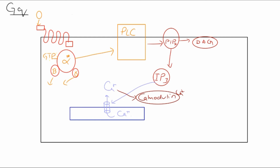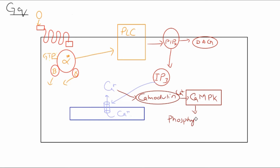Calcium will activate another enzyme called calcium-calmodulin protein kinase, also known as CaMPK. When this enzyme is activated, it will start phosphorylation of different enzymes, phosphorylation of different transcriptional factors, and also phosphorylation of some ion channels present in the cell.